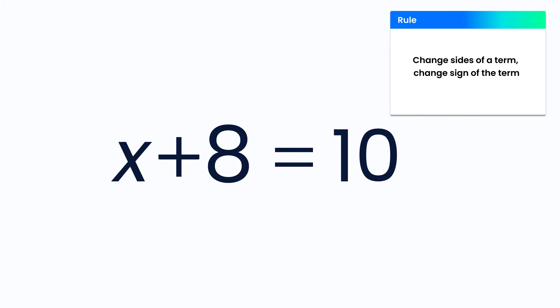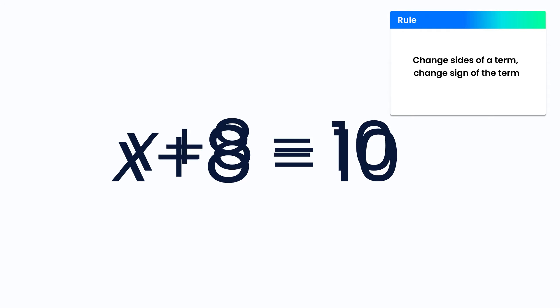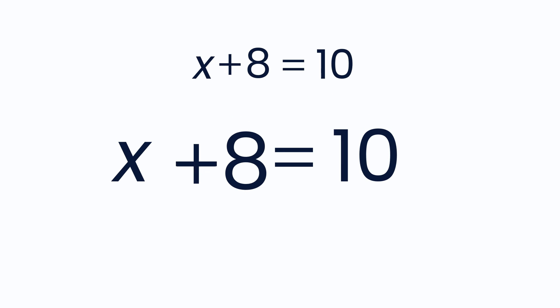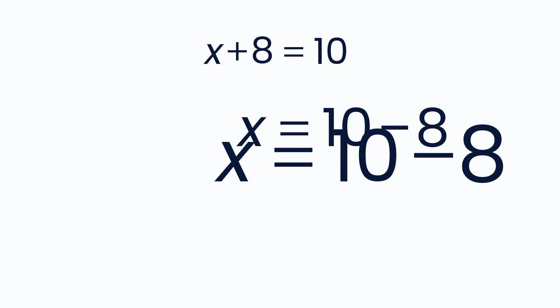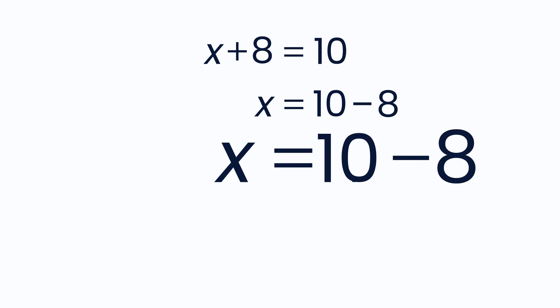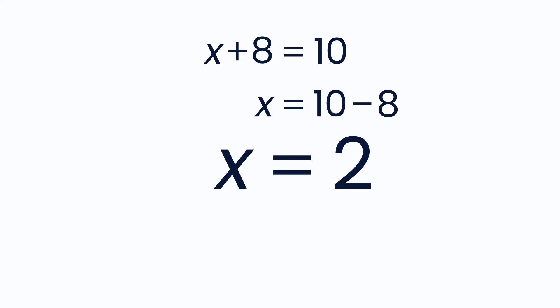Since 8 is on the same side as x, you want to move it to the right side. Doing this turns 8 into minus 8. Now you have that x equals 10 minus 8. 10 minus 8 equals 2, so the solution is x equals 2.